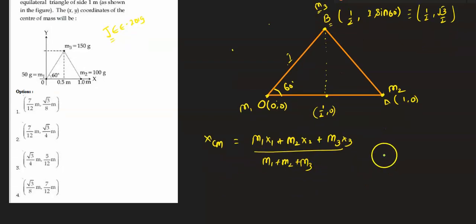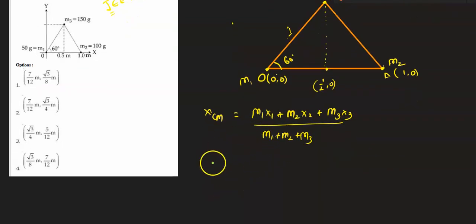Putting the values, I will get xcm as m1 is 50 grams and the x coordinate of that point is zero, so 50 times zero. Plus m2 is 100 grams and the x coordinate is one, so I can write 100 times 1.